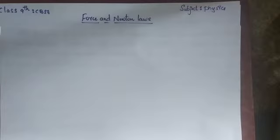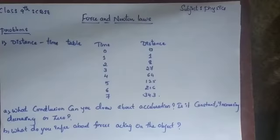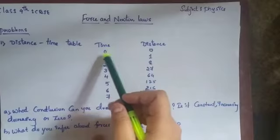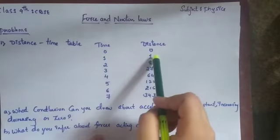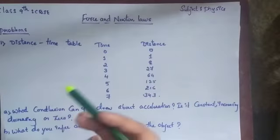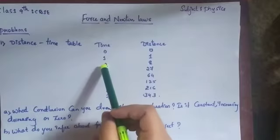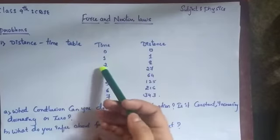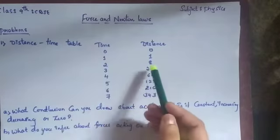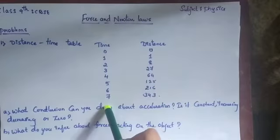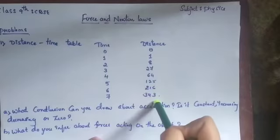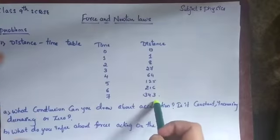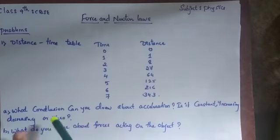Hello students. Today, under the Force and Newton's Laws chapter, we are going further with some unsolved problems. The first question has a table with distance and time given. For zero seconds, zero distance has been traveled. For one second, distance is one meter; two seconds, eight meters — and so on up to seven seconds, where 343 meters is given.